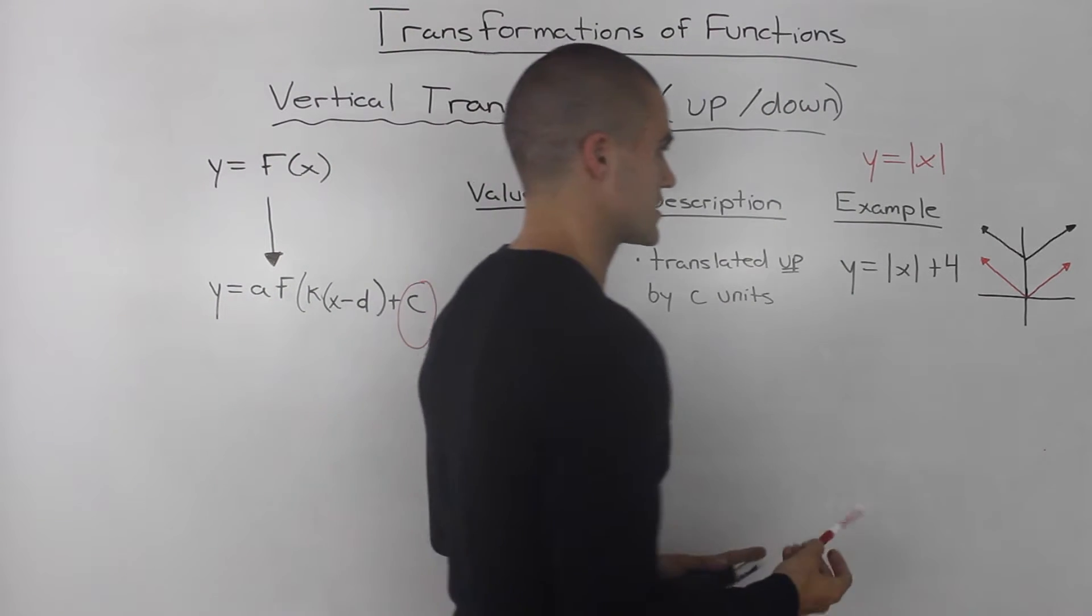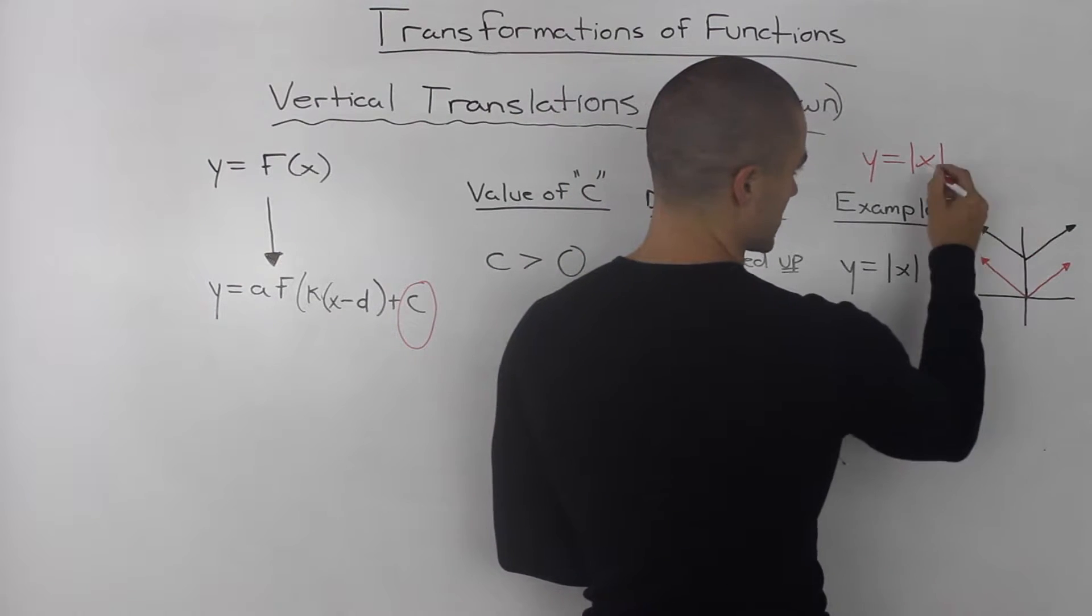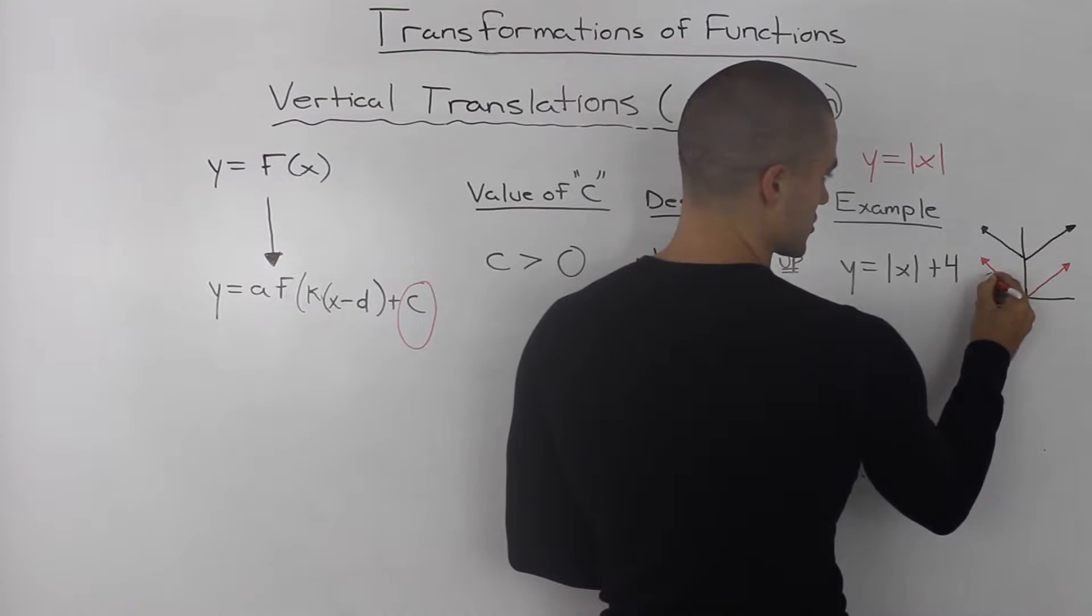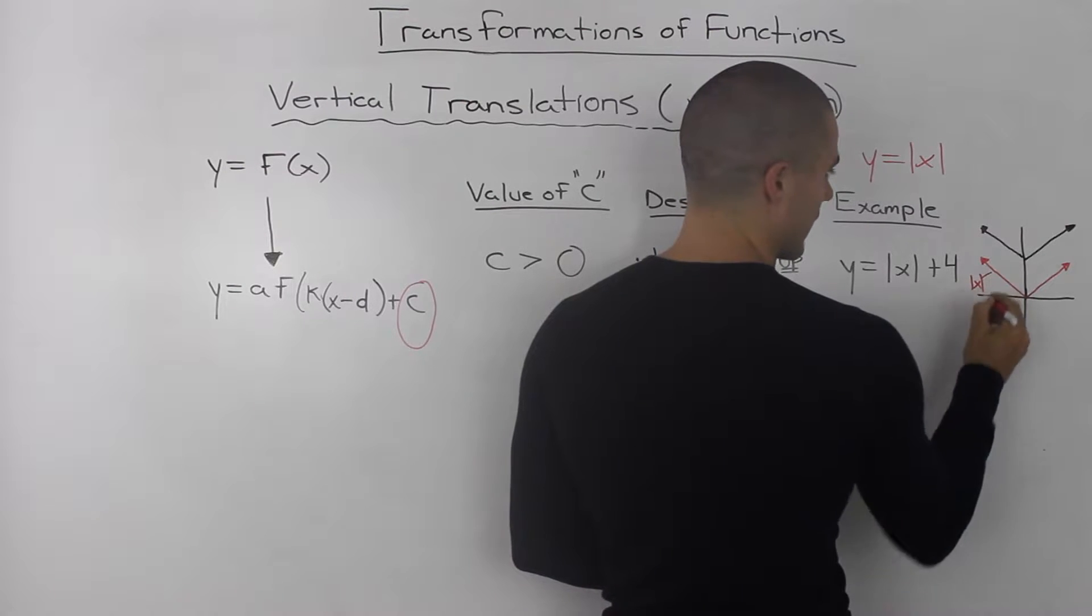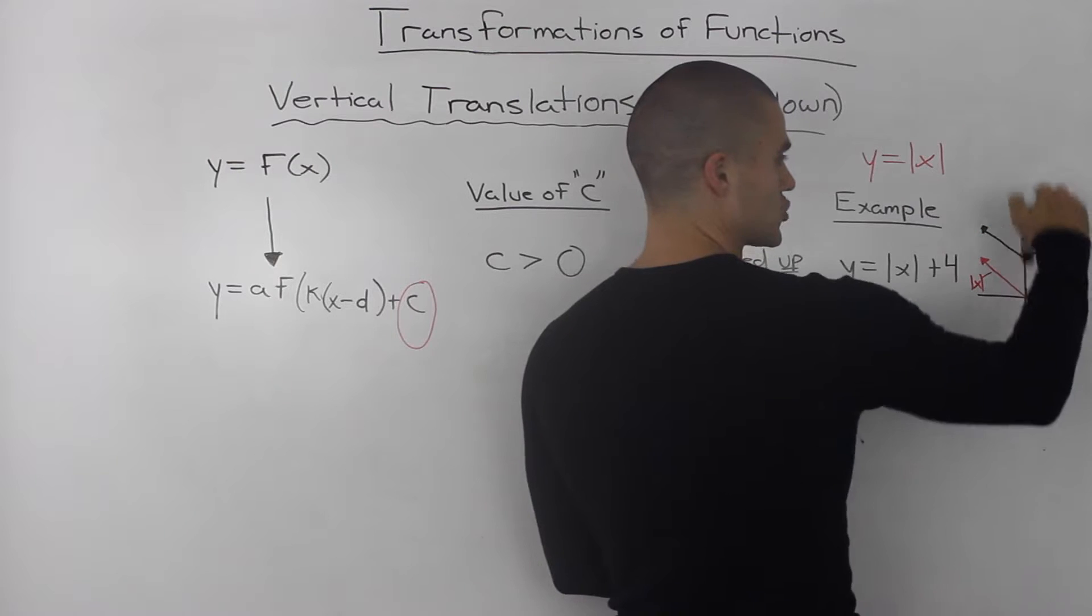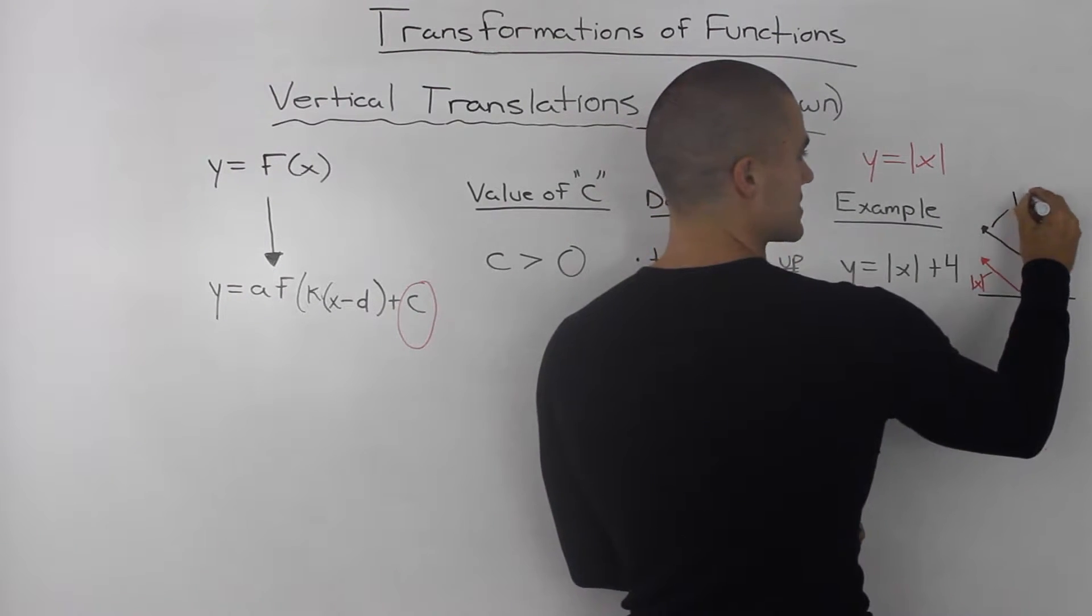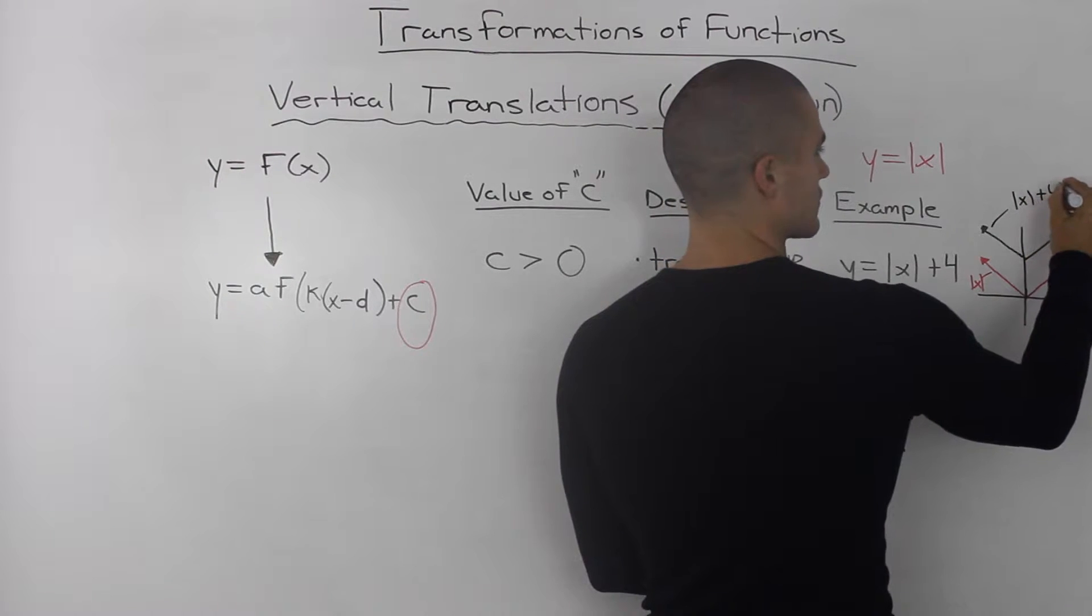If we show this in a graph, the red represents our original parent function—this is how the absolute value of X looks like. Then we take that function and translate it up by 4 units. This function here is the absolute value of X plus 4.